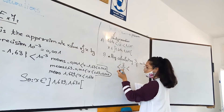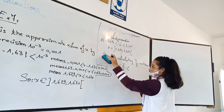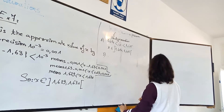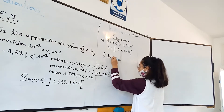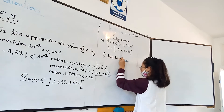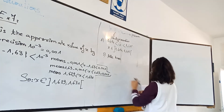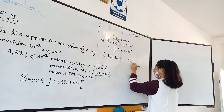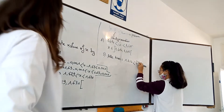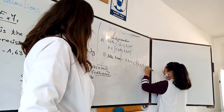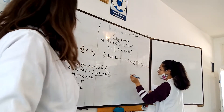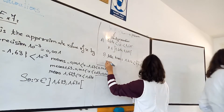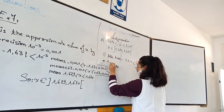Number 2: give the approximation by excess and by default. The value goes to 1.414 and 1.415. So what is excess and default? 1.414 is the default and 1.415 is the excess.